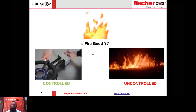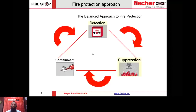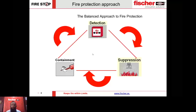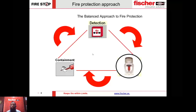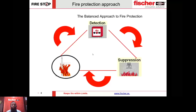When we talk about safety, controlled fire is good and uncontrolled fire is a disaster. So we need to control the uncontrolled fire — that is what fire protection is all about. When we talk about fire protection we have to go with a balanced approach. We essentially need to immediately detect if there is a fire within an environment, so we have smoke detectors installed in many buildings.